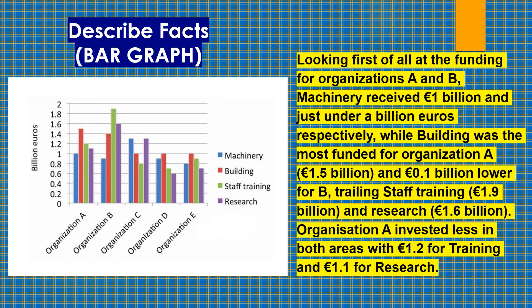Looking first at funding for organizations A and B: machinery received 1 billion euros and just under 4 billion euros respectively, while building was the most funded for organization A and 0.1 billion euros lower for B. Trailing were staff training at 1.9 billion euros and research at 1.6 billion euros. Organization A invested less in both areas, with 1.2 billion euros for training and 1.1 billion euros for research.